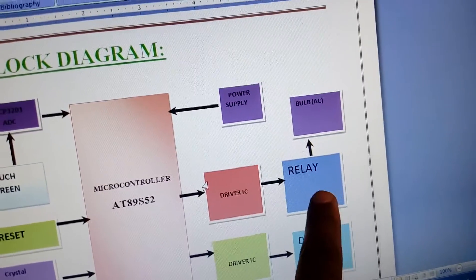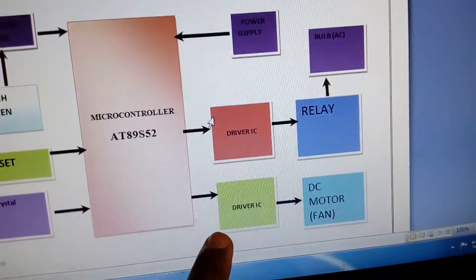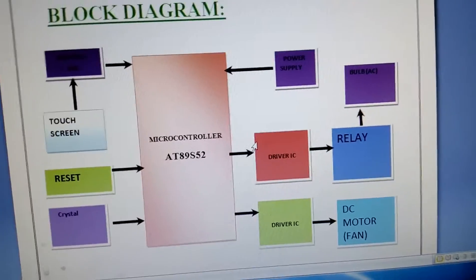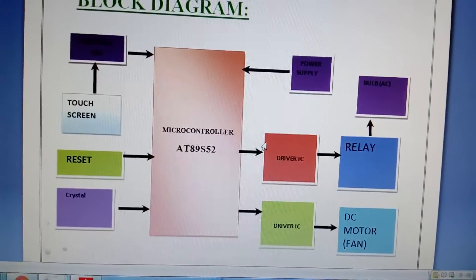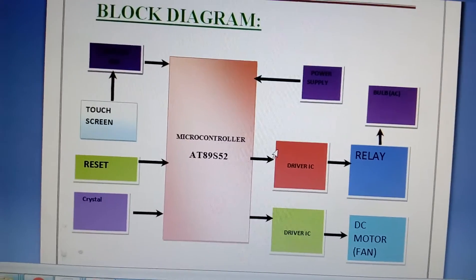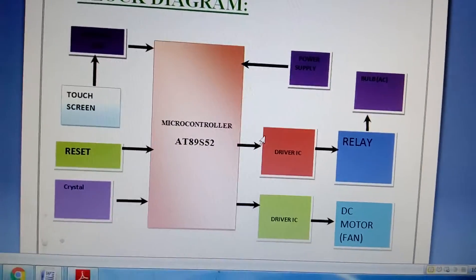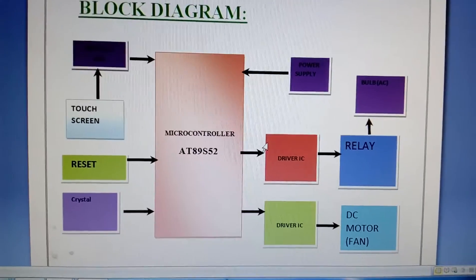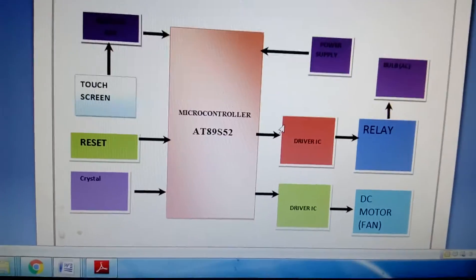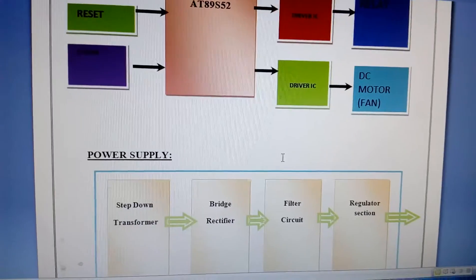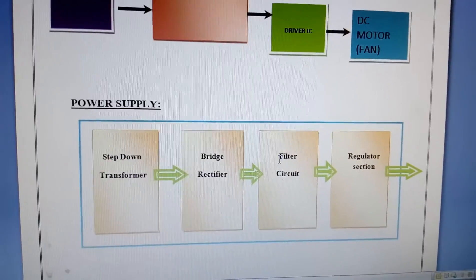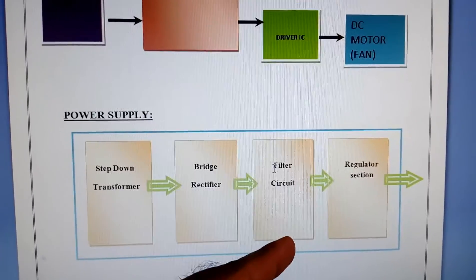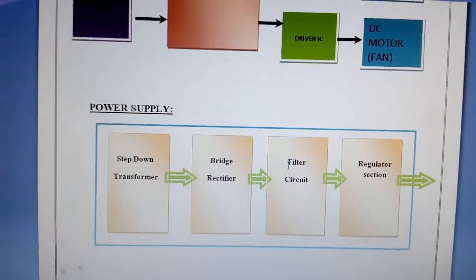We are using one power supply section, one AC bulb with a relay coil and driver IC, and one DC fan with a driver IC. We can add more devices — two lights one fan, three lights one fan, four lights two fans — depending on your requirement. The power supply section consists of a step-down transformer, bridge rectifier, filter capacitor, and a 7805 regulator.